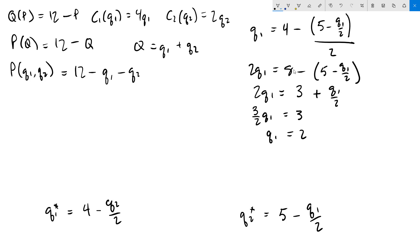We now plug that back into firm 2's best response function to get q2 equals 5 minus 2 over 2, which is 4. We now know the Nash equilibrium quantities for each firm. We can then plug them into the inverse demand function to figure out the price. So we get p equals 12 minus q1, which is 2, minus q2, which is 4, and that gives us a price of 6. That's all the information we needed for part B of the problem.